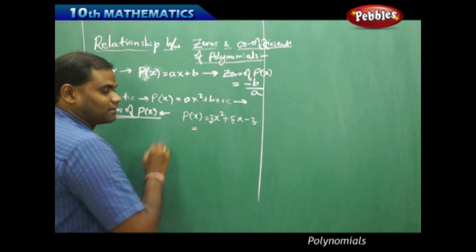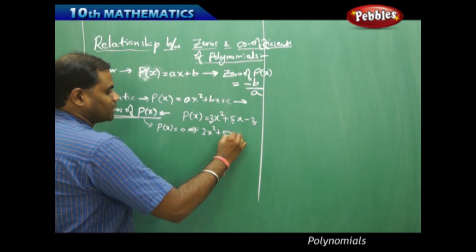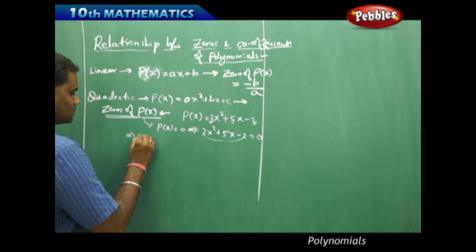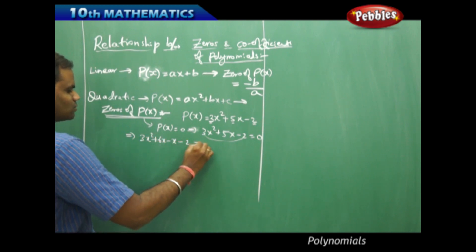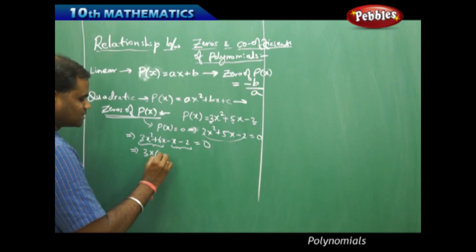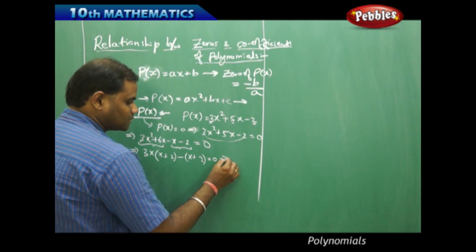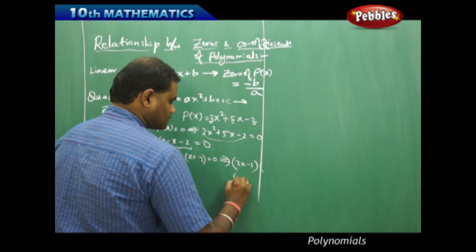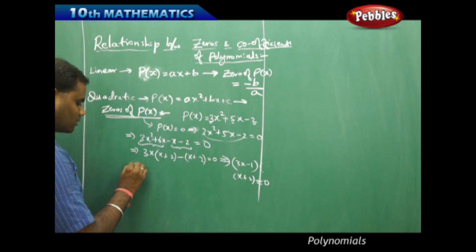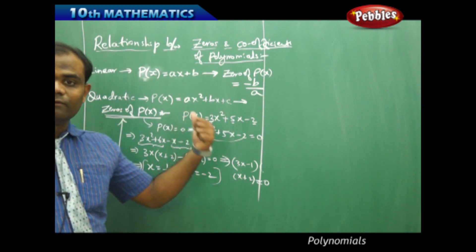Let me find the zeros by factorizing, since we get the zeros by taking p(x) equal to zero, which gives 3x squared plus 5x minus 2 equals zero. On factorization: 3 times 2 is 6, and 6 minus 1 gives 5, so we get 3x squared plus 6x minus x minus 2 equals zero. Pairing the first two and last two terms and taking common factors gives 3x(x plus 2) minus 1(x plus 2) equals zero.